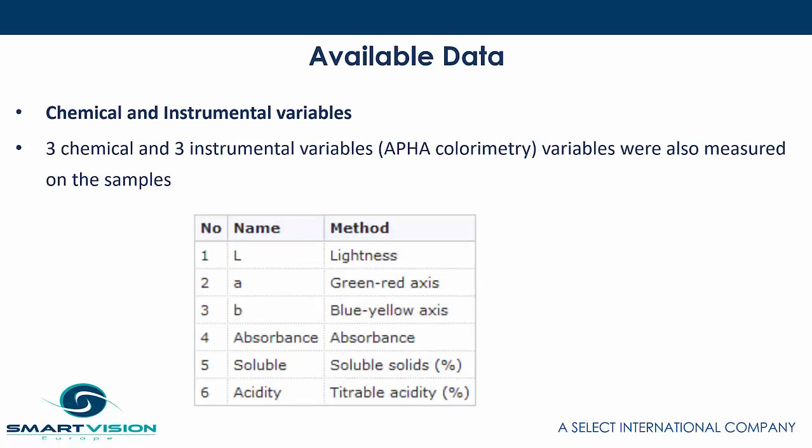We also have some chemical and instrumental variables — three chemical and three instrumental variables measured on the samples. These include variables like L referring to lightness, A for the green-red axis, and B for the blue-yellow axis, and then absorbance, solubility, and acidity.